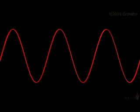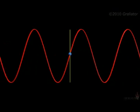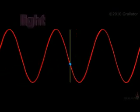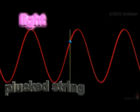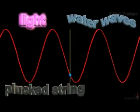Transverse waves are waves in which the vibrations are at a right angle to the direction of wave motion. Light, the vibrations of a plucked string, and water waves are all good examples.